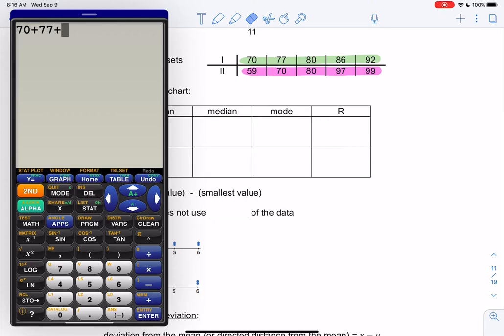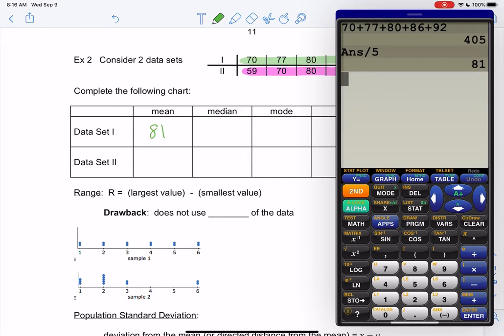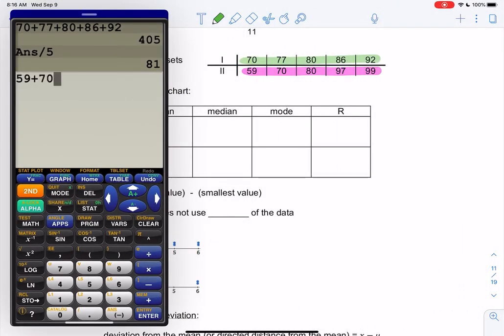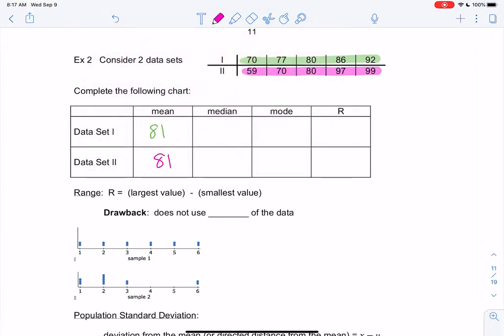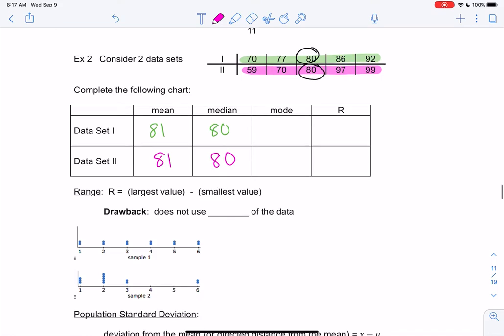So mean, we just add them up. And then there's five numbers, so we divide by five. So I get 81 for my green set, or my set one. And do the same thing for set two. Add up the five numbers. Make sure you hit enter because it's not going to divide all the numbers by five if you don't hit enter. Then divide by five, and it looks like we get the exact same number. How about my median? Median is right in the middle, so it looks like that's 80 for both of them. And then mode is just what shows up the most. Nothing shows up more than once, so they would both be none. There is none. We don't have to have a mode.